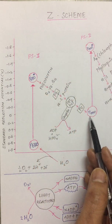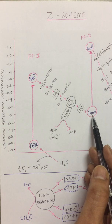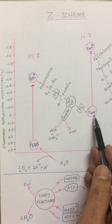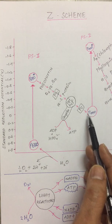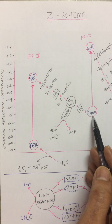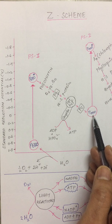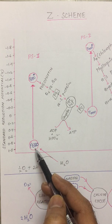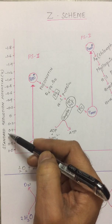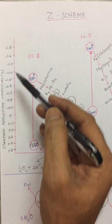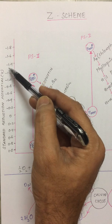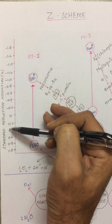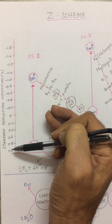PS1 is also called P700, where 700 refers to the wavelength that it absorbs — around 700 nanometers. P680 absorbs a wavelength of 680 nanometers. There is a standard reduction potential axis, moving from a more negative reduction potential downwards towards a positive reduction potential.